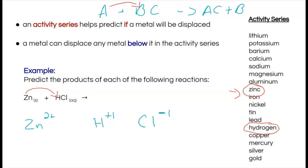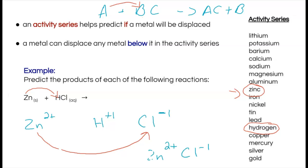Zinc will combine with the chloride ion — opposite charges attract, so positive zinc goes with negative chloride. Zinc will never go with hydrogen because they have like charges and repel each other. Doing the crossover rule with zinc (two-plus) and chlorine (negative one) gives zinc chloride. The leftover hydrogen can't exist alone — it's on the diatomic list, so we write it as H₂.